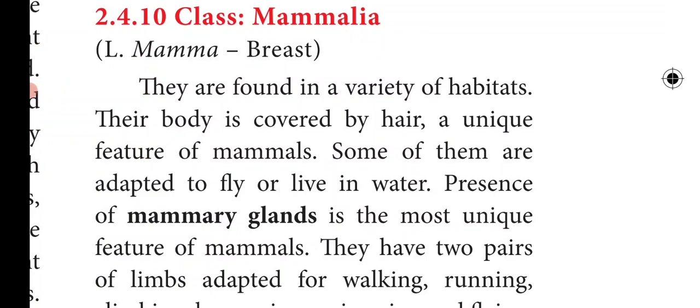The body of mammals is covered by hair — this is one of the unique features. Some are adapted to fly or live in water, showing high adaptations. The presence of mammary glands is the most unique feature of mammals. The mammary gland is the gland which secretes milk for the young ones. Mammals have two pairs of limbs adapted for walking, running, climbing, burrowing, swimming, and flying.